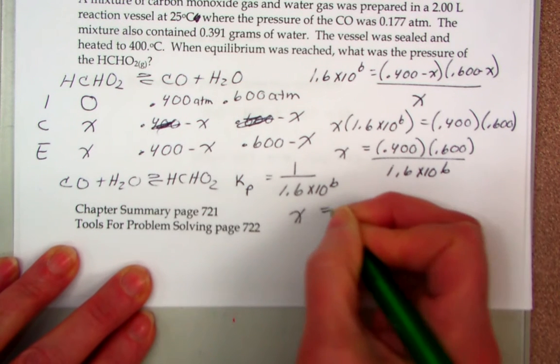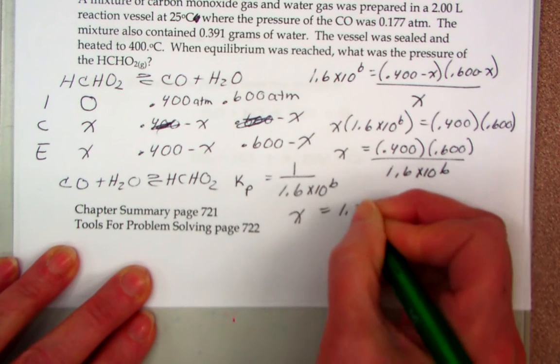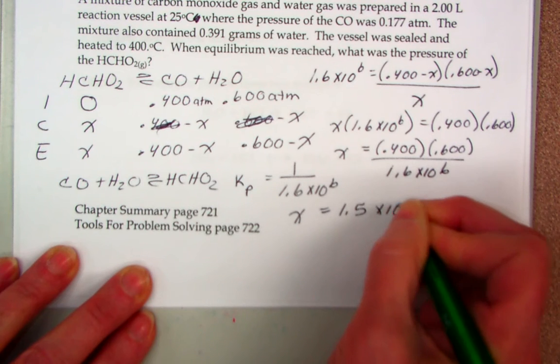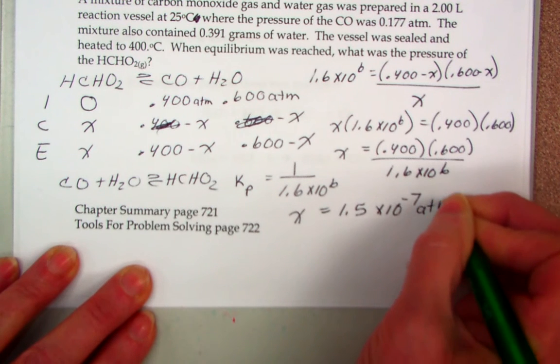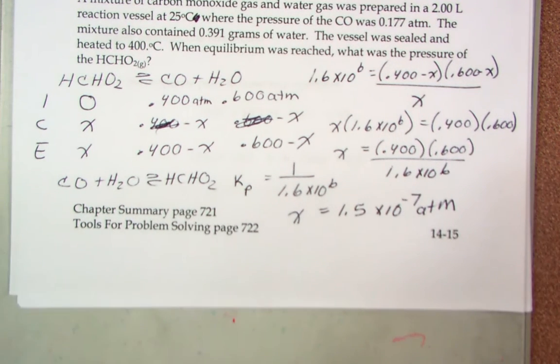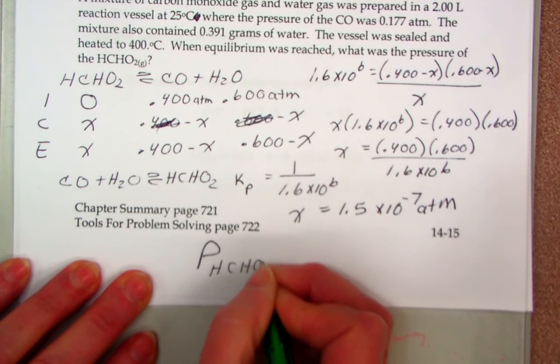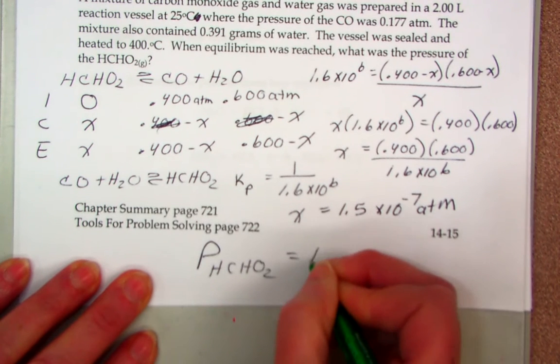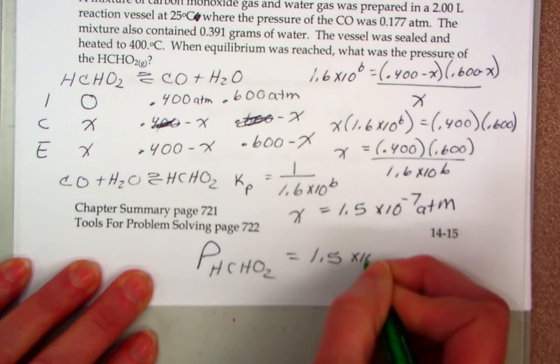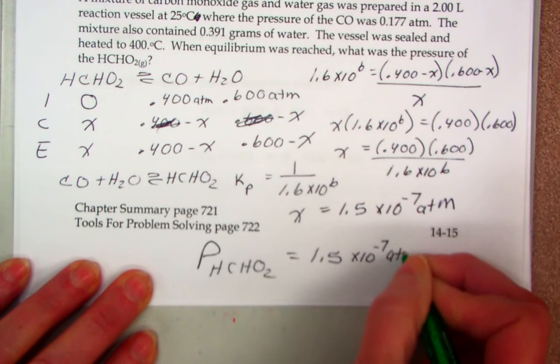Indeed, x is small. It is 1.5 times 10 to the negative 7th atmospheres. Now, that is very small compared to 0.4 or 0.600. So, the pressure at equilibrium is equal to 1.5 times 10 to the negative 7th atmospheres.